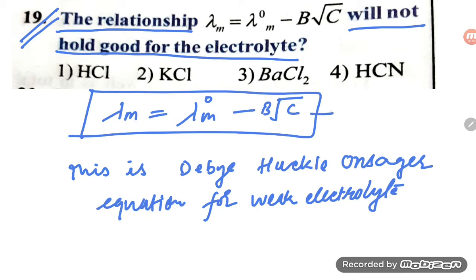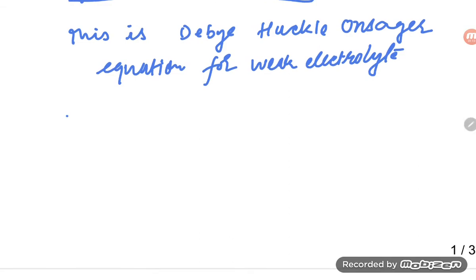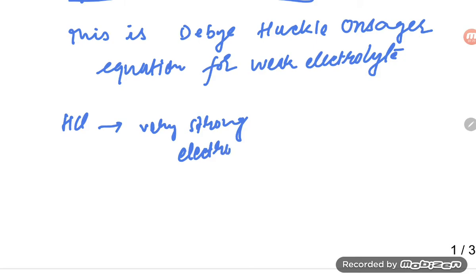We understand this equation is for weak electrolytes, so whichever option is a weak electrolyte will be our answer. When you talk about option one, HCl — HCl is a very strong electrolyte, completely ionized into H⁺ and Cl⁻.